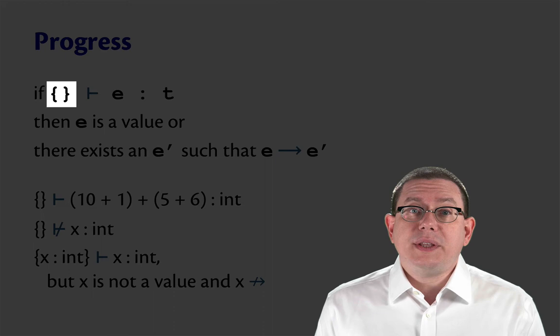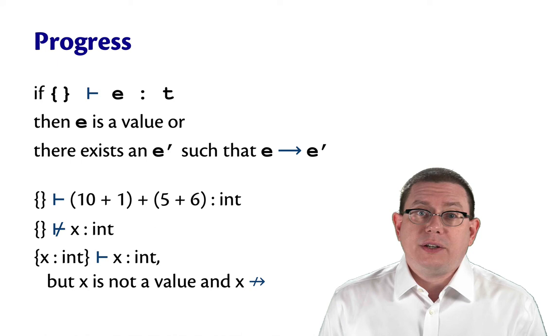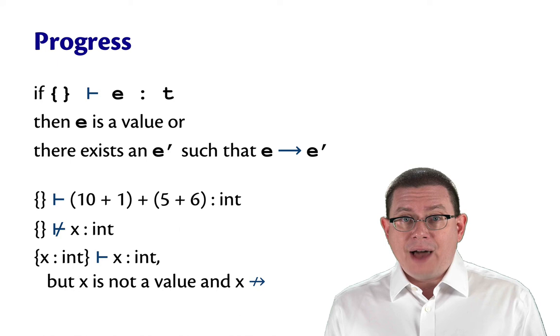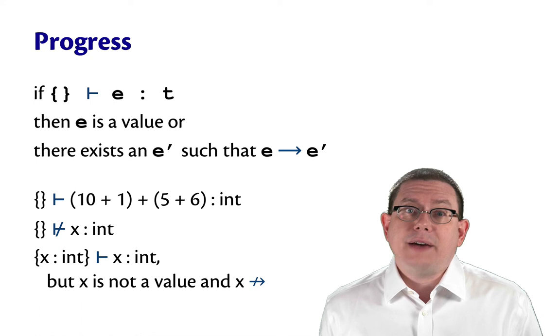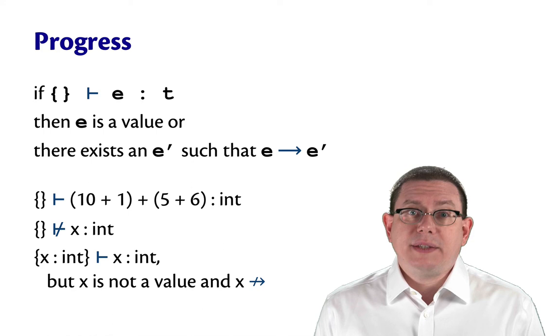Finally, notice that that empty environment in the statement of progress is actually important. We can't extend it to arbitrary environment. For example, if we started off in the environment that did have X bound to int, then we would be able to conclude that that is well typed because X does have type int in that environment. But X is not a value and X does not step. So it's important for progress this be an empty environment.